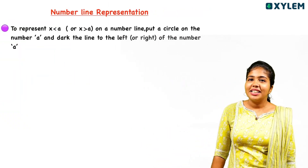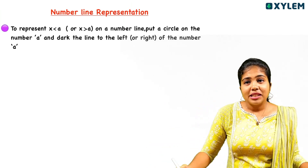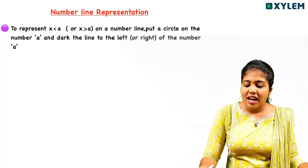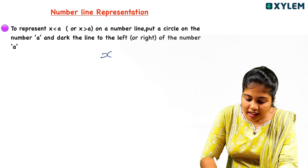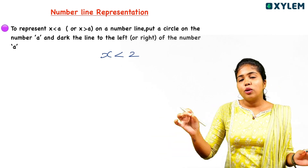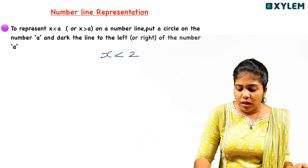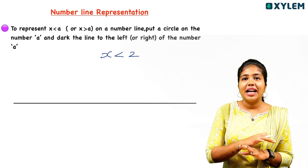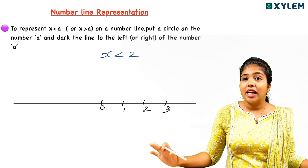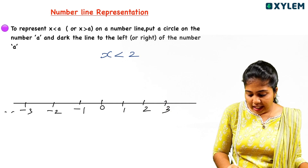The next thing is number line representation. We need to represent inequalities on a number line. For example, if we have x minus 2 in the system, we represent it on the number line. The number line has points: 1, 2, 3, and so on.